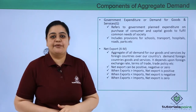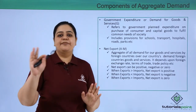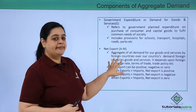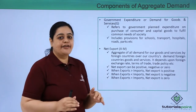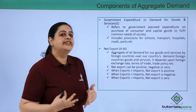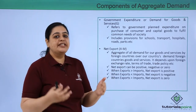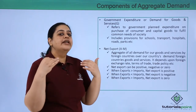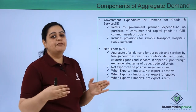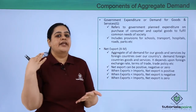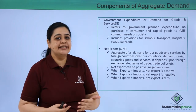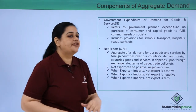The next component is net exports, represented as X minus M — that is, exports minus imports. When talking about aggregate demand, exports refer to goods and services produced in the Indian economy and demanded by foreign economies, while imports are goods and services produced in foreign economies and demanded by households and firms in India. Exports and imports depend on the foreign exchange rate — for example, if the foreign exchange rate is very high, imports of goods and services would likely be less because they would be more costly.